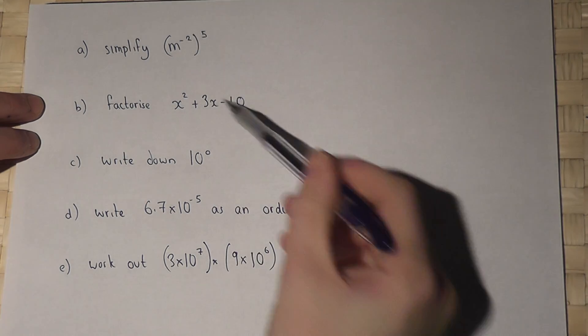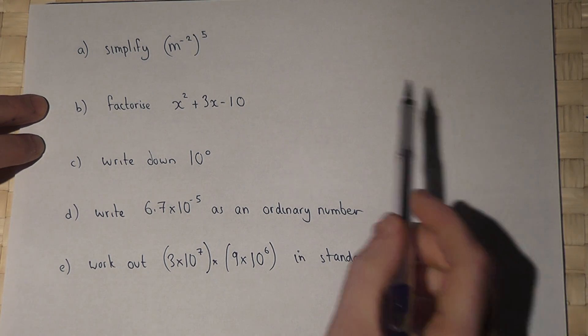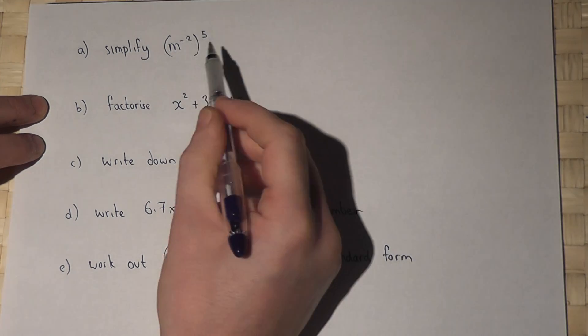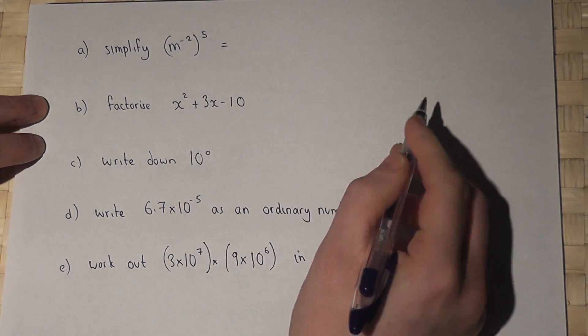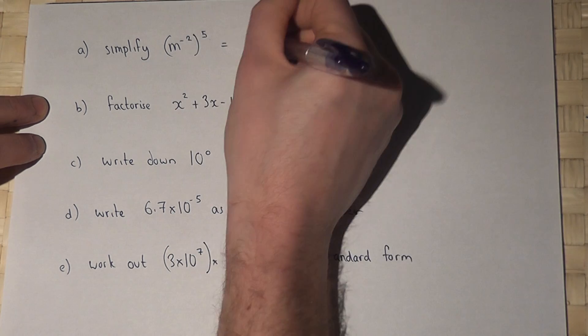This video looks at five questions all linked to powers. When you're asked to simplify an expression with a bracket, the rule is to times together the two powers. So five times minus two is minus ten.